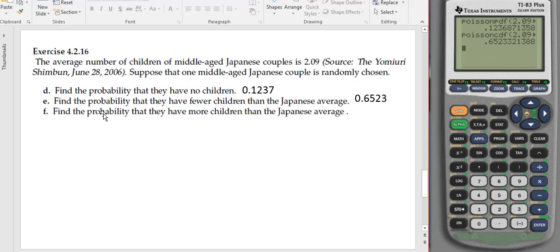Now the last problem asks us to find the probability that they have more than the average couple. Because these two are complements, we can just subtract this answer from 1 and find our value. So we do 1 minus our answer, hit enter, and we get 0.34766.